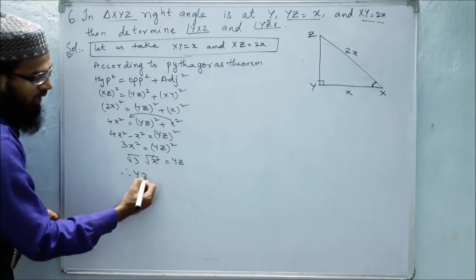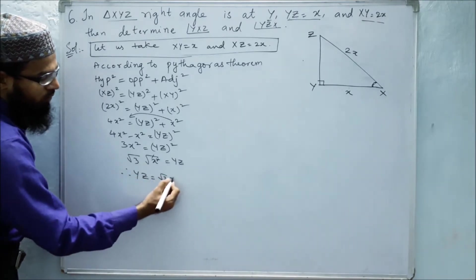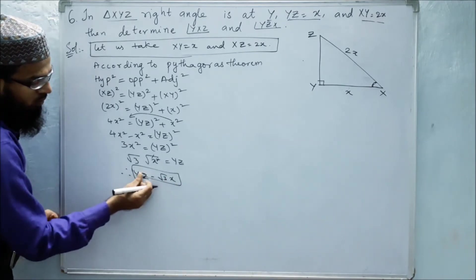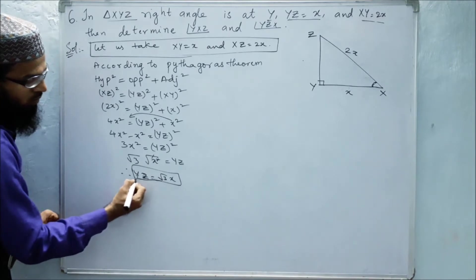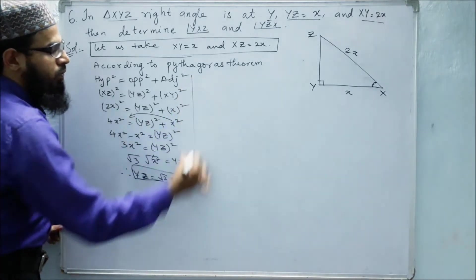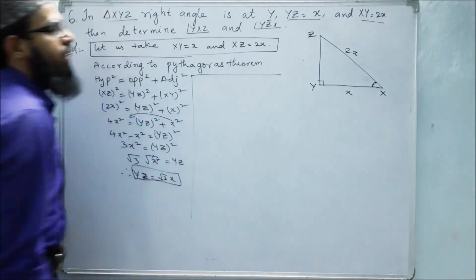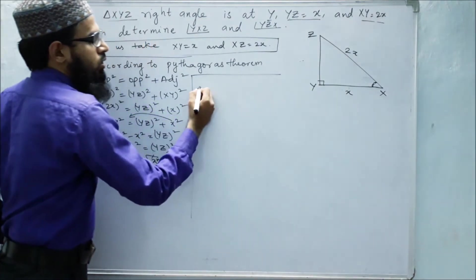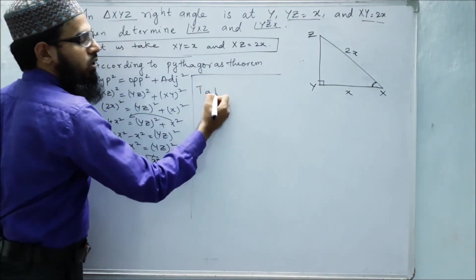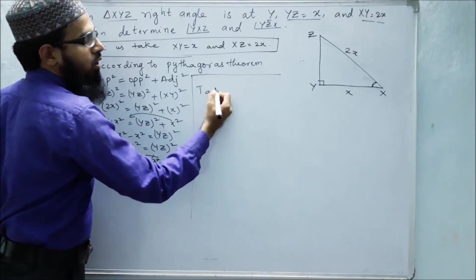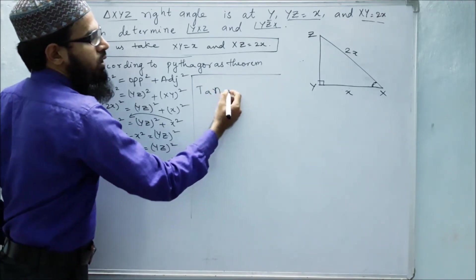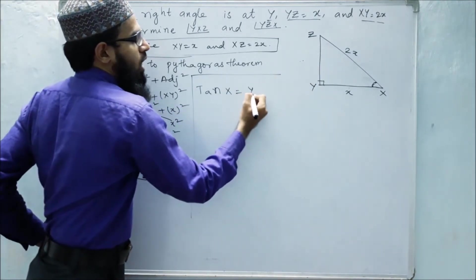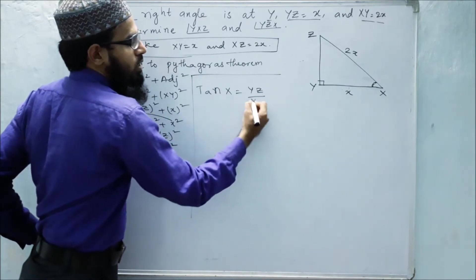For finding the angles, angle X, we can take opposite by adjacent. So where do we get that opposite by adjacent? Or else we will directly take tan X. Tan X.